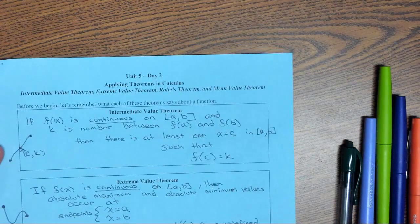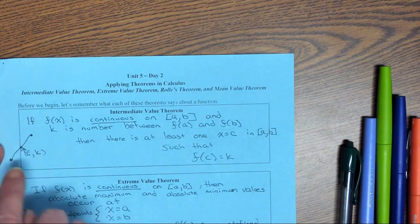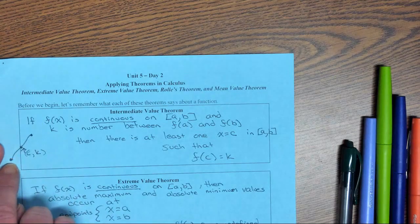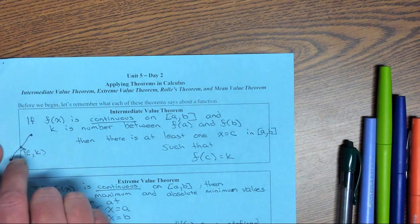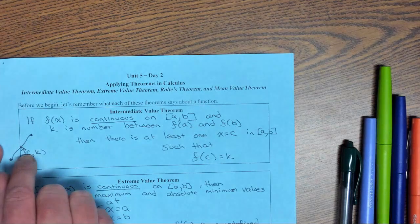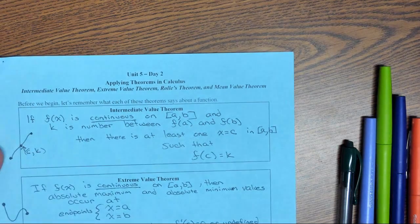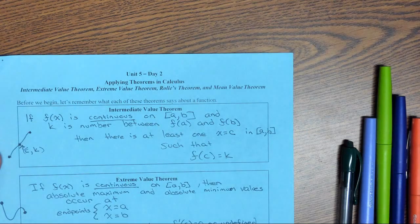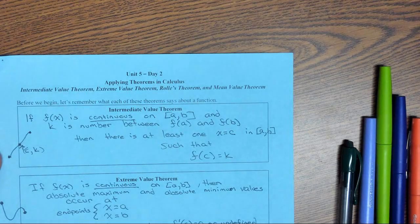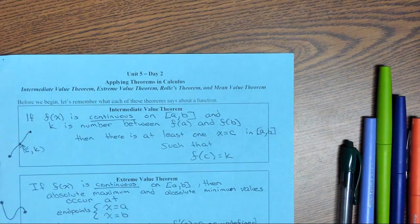Intermediate Value Theorem says if we're continuous between A and B, so our graph goes through it, there's a number between them where we have an x value that gives me that y value. Basically, it says we're going to hit every y value on the way up between f(A) and f(B).